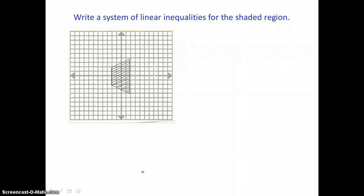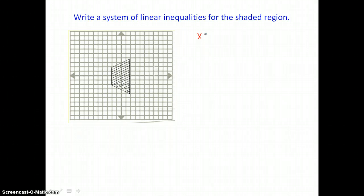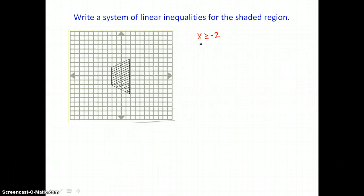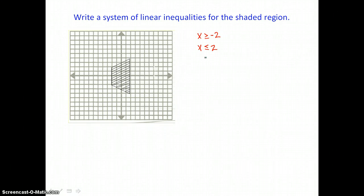In this example, we're going to go the other direction and write a system of linear inequalities for a given shaded region. I'll write boundary lines for the vertical sides of this quadrilateral. On the left, it's x equals negative 2, and since we're shading to the right, x is greater than negative 2. On the other side, we have x equals positive 2, and since I'm shading to the left, the inequality is x less than or equal to 2.